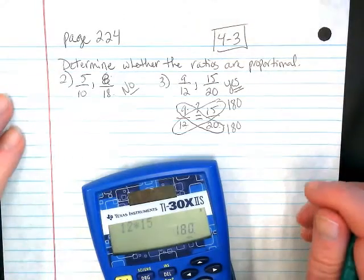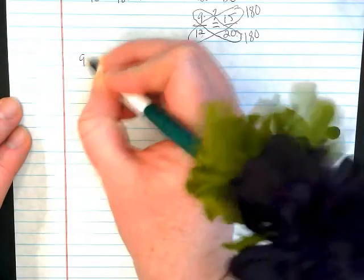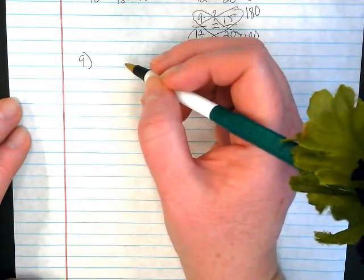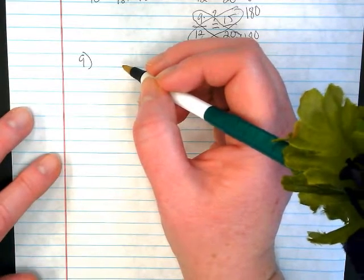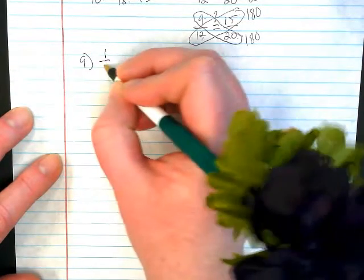Alright, you will also have problems that say things like this. Number nine in the book says find a ratio equivalent to each ratio. Then use the ratios to write a proportion. And number nine is one-third.